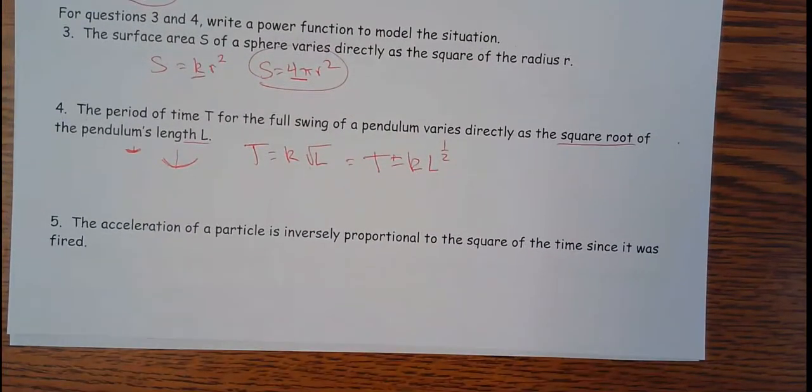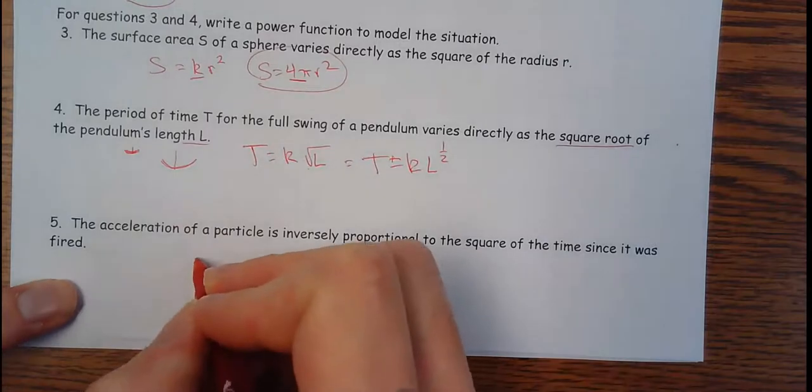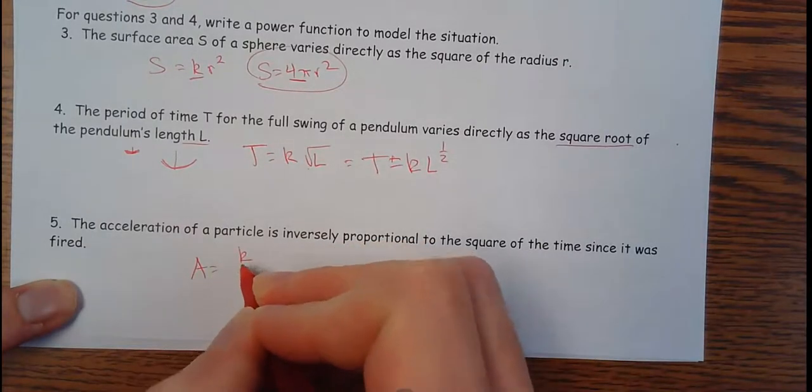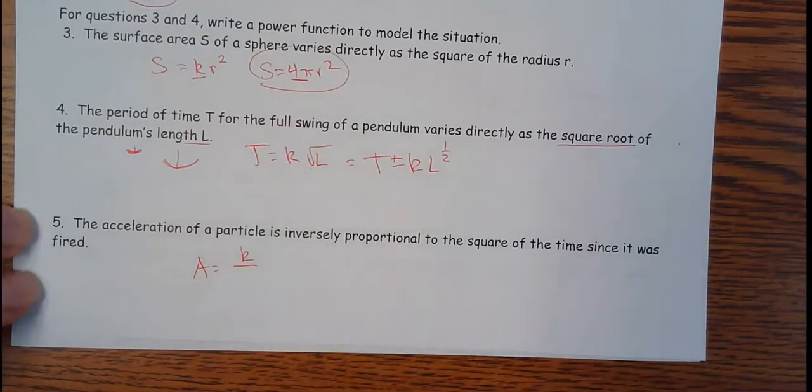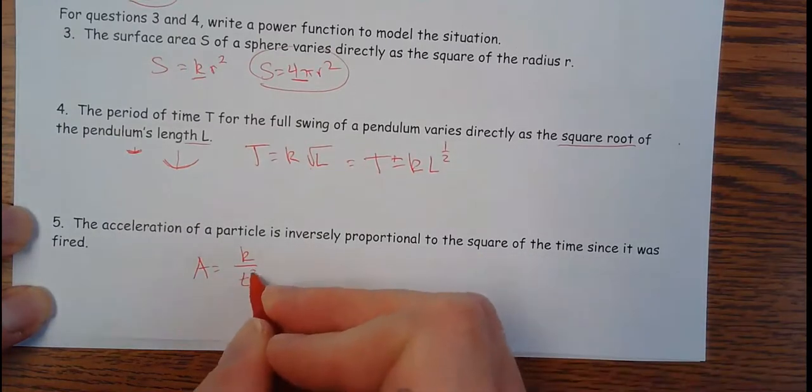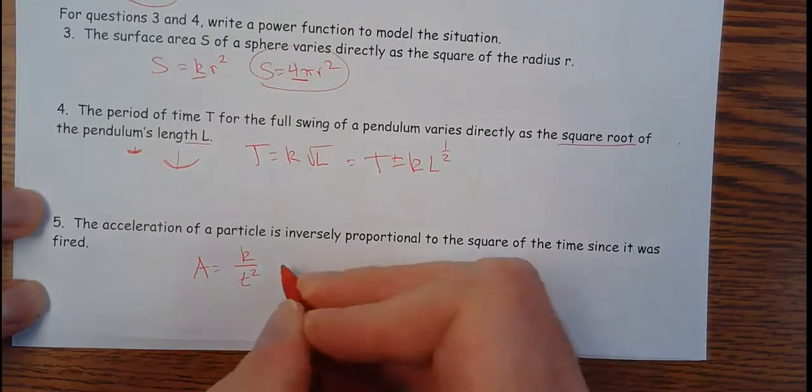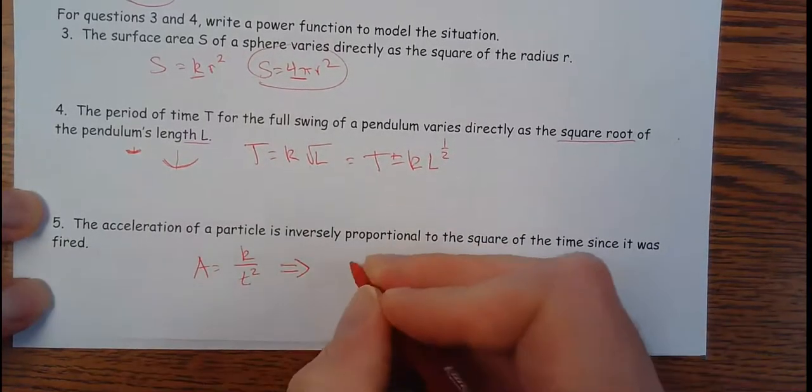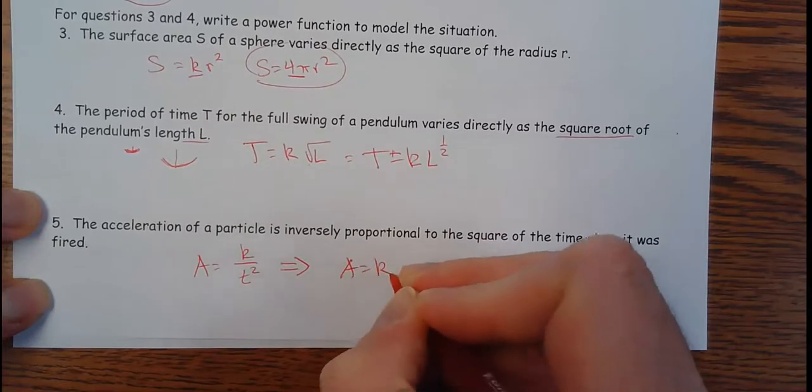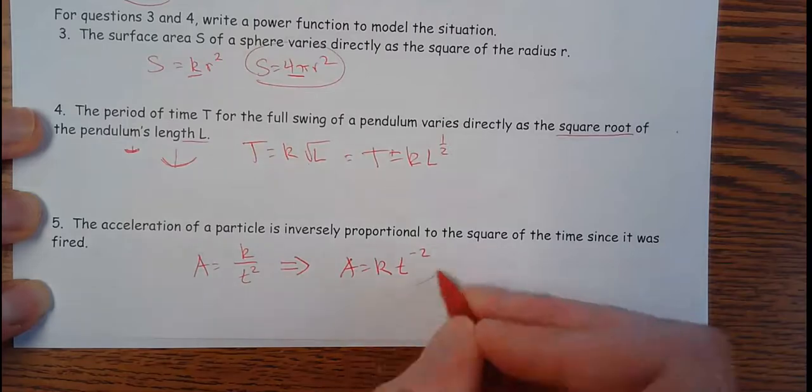The acceleration of a particle is inversely proportional. So I've got the acceleration is inversely proportional, so I've got k divided by the square of the time since it fired. Now, you want to rewrite this as a power function. So this would be a equals k, and then this would be t to the negative 2 when I bring that up.